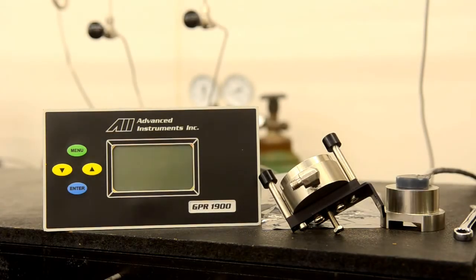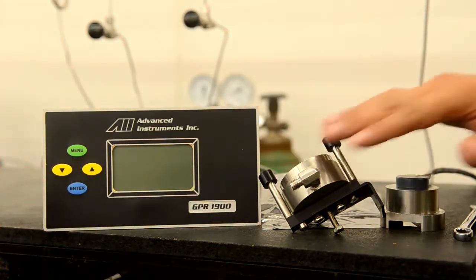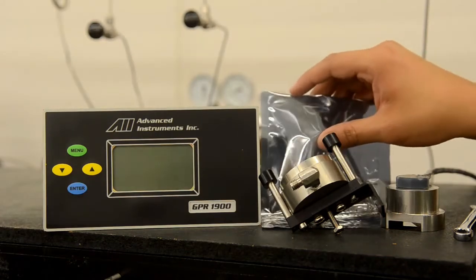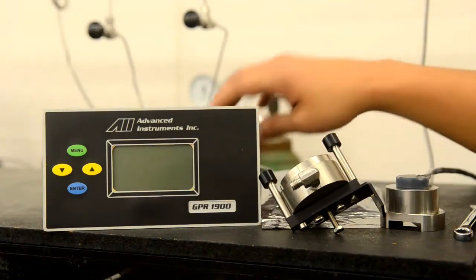When you receive the unit, it will come with the main module, the sensor housing top and bottom, the oxygen sensor purged in nitrogen and bagged and sealed, and the associated cables with the unit.